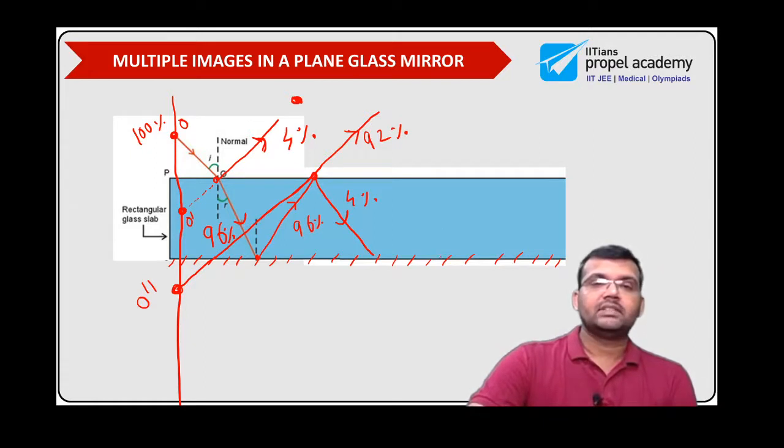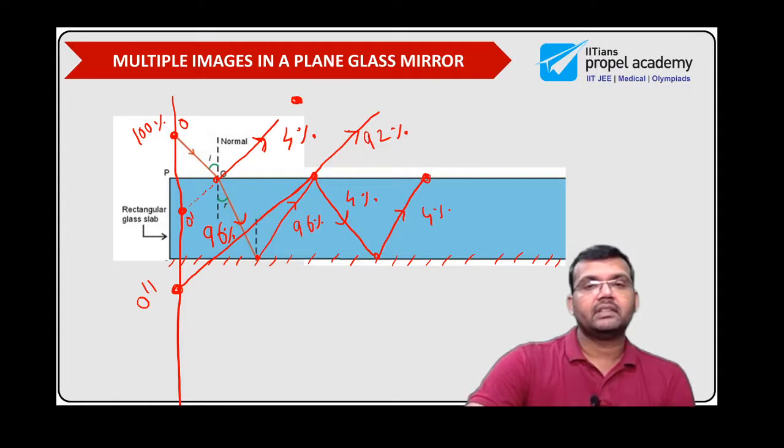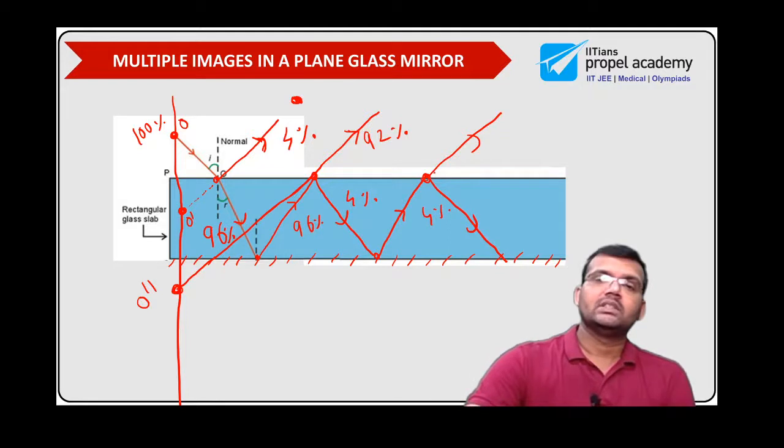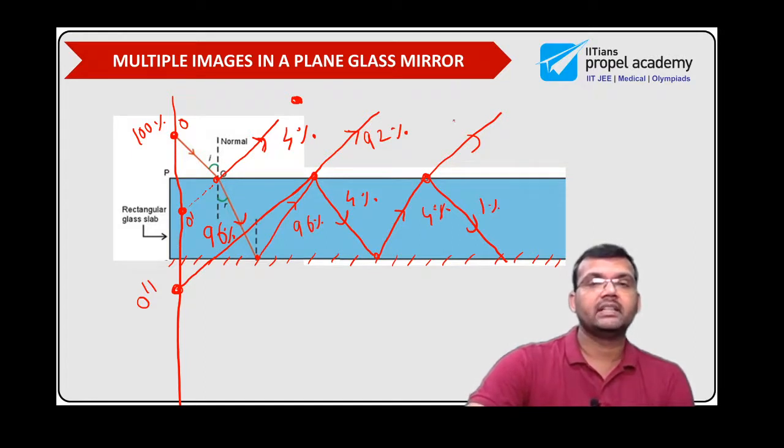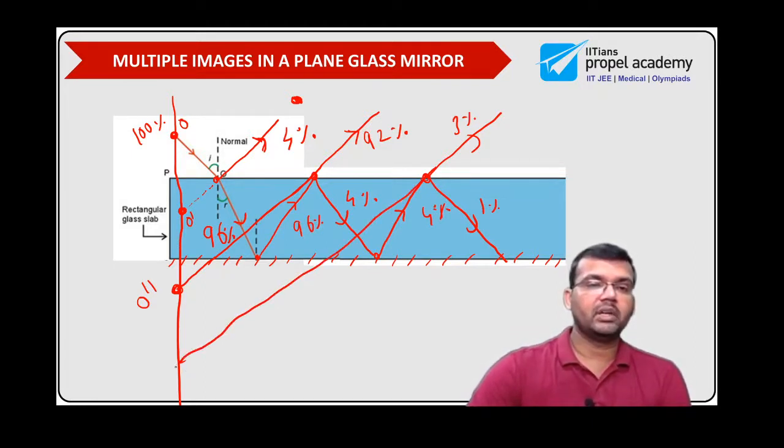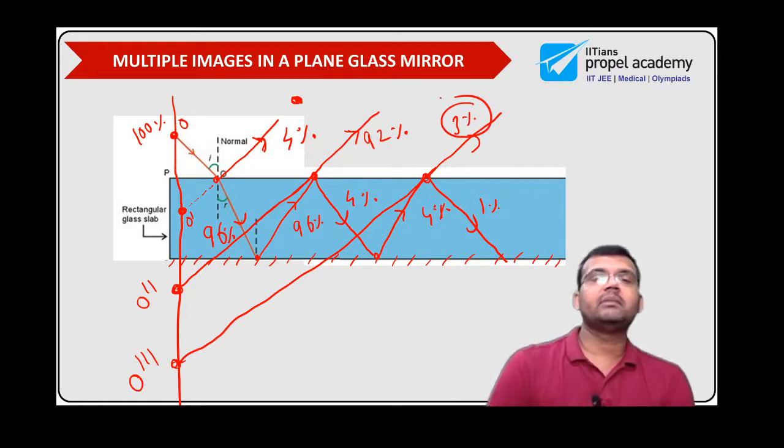Next, out of this 4%, maybe the entire 4% reflects back. And again here, you have refraction and reflection further. So 4% of the light, out of 4%, you have a split here. Let's say only 1% reflected back and 3% refracted. So now if you draw a parallel line, you have one more image, that's O triple dash, and this image is formed only with 3% of intensity.